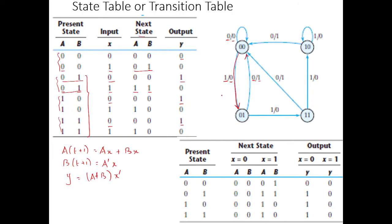This state diagram forms the basis for finite state machines. Since we have a finite number of states, this circuit can be considered a machine. Upon receiving an input, the machine moves from one state to another and produces an output. This finite state machine describes the complete functioning of the sequential circuit.